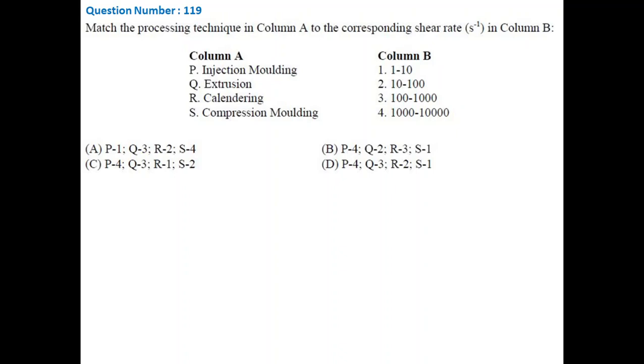Next is calendaring. Calendaring is the process to make thin sheet. During this process, thick polymer films are stretched to form thin film. So it definitely gives more shear than compression molding, but still not a lot. The typical shear rate range is 10 to 100.